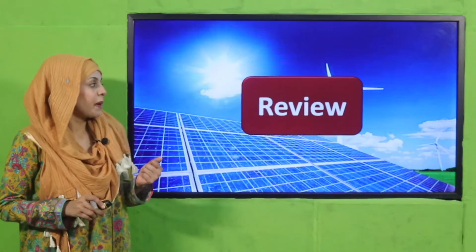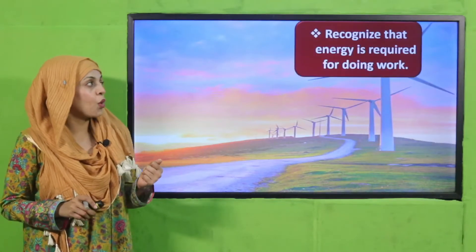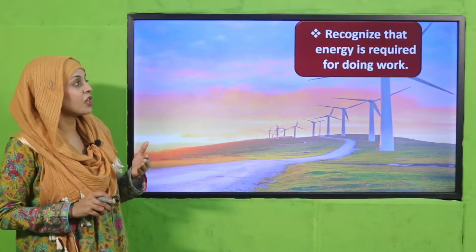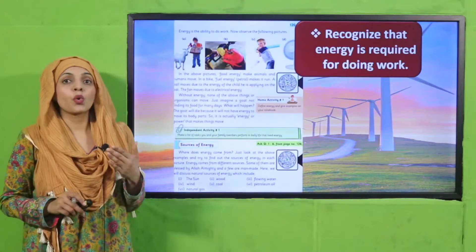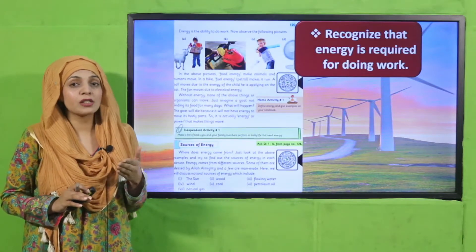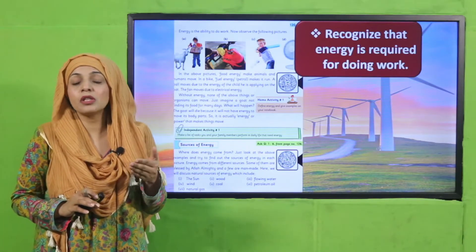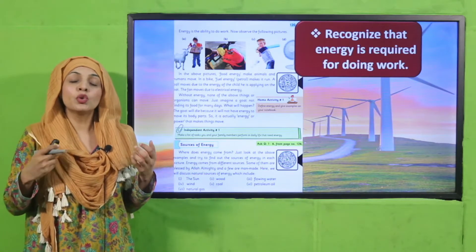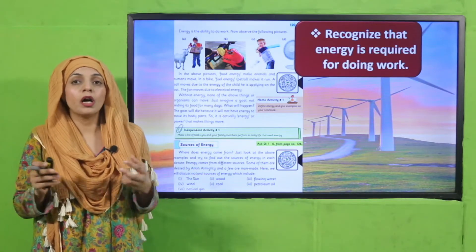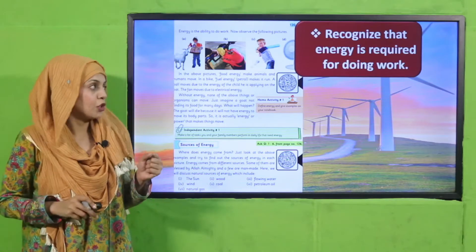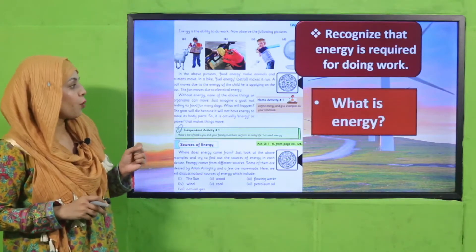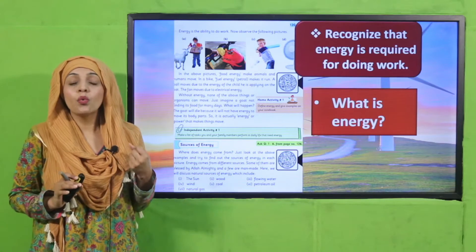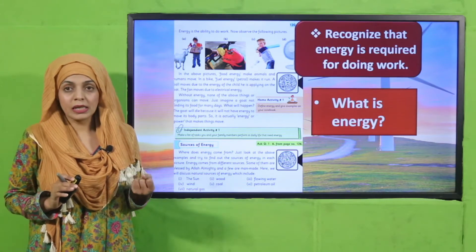Let's start the review. In the first lecture, we recognized that energy is required for doing work. For living things and non-living things — plants, animals, human beings — everyone needs energy to perform different work and to move. Energy is the ability to do work.